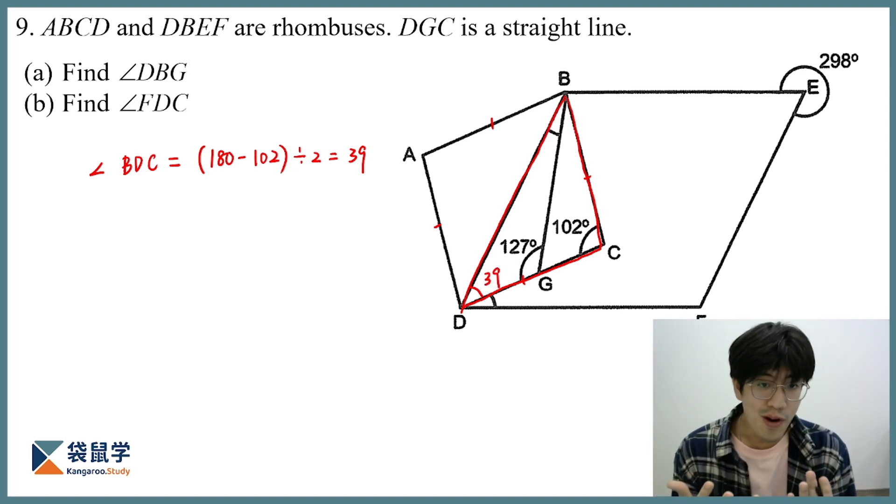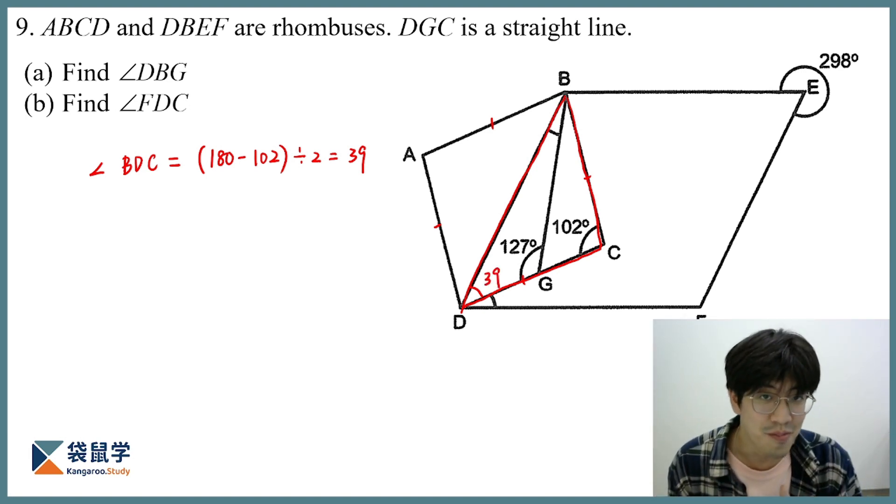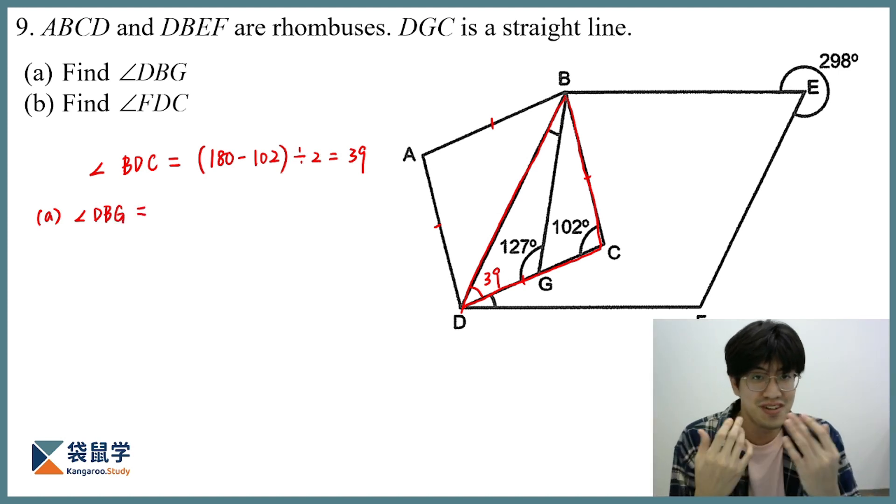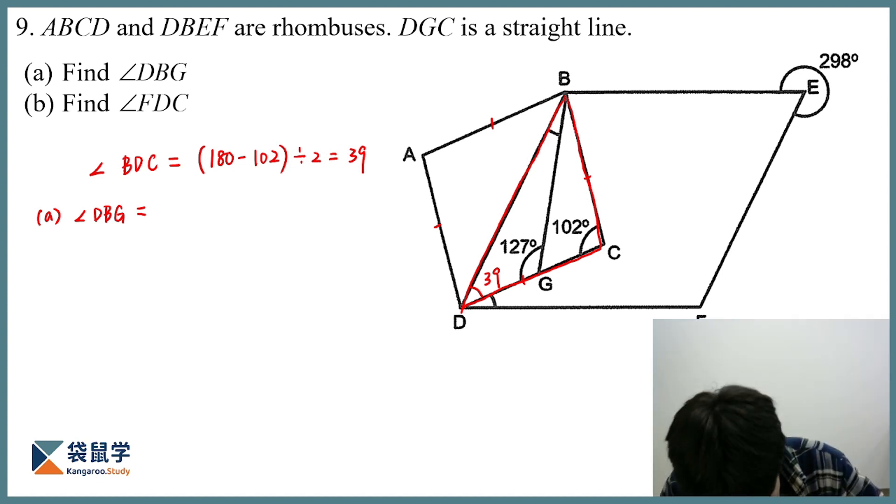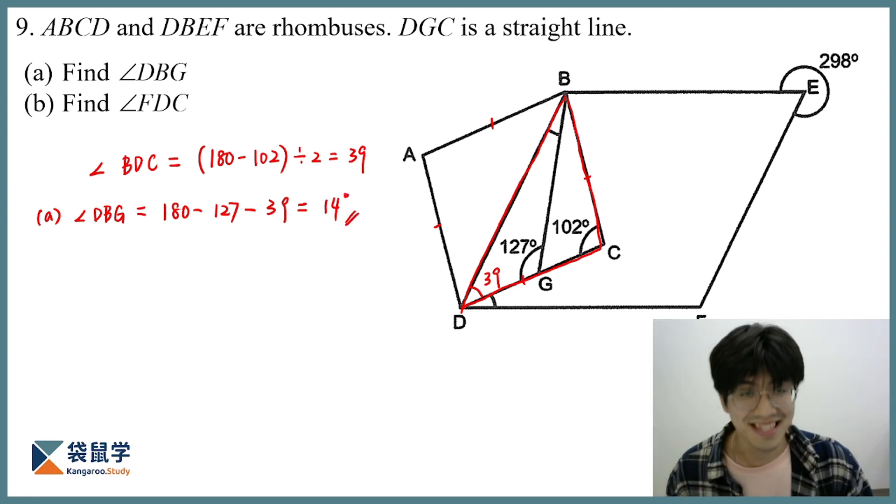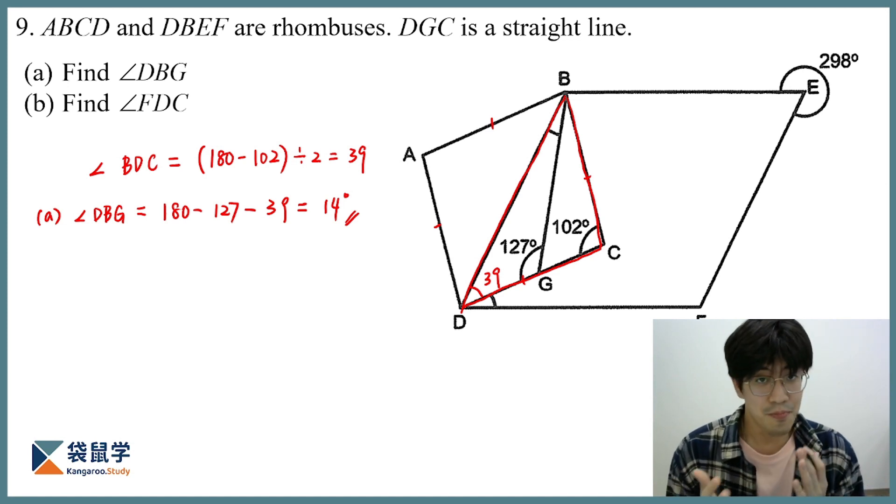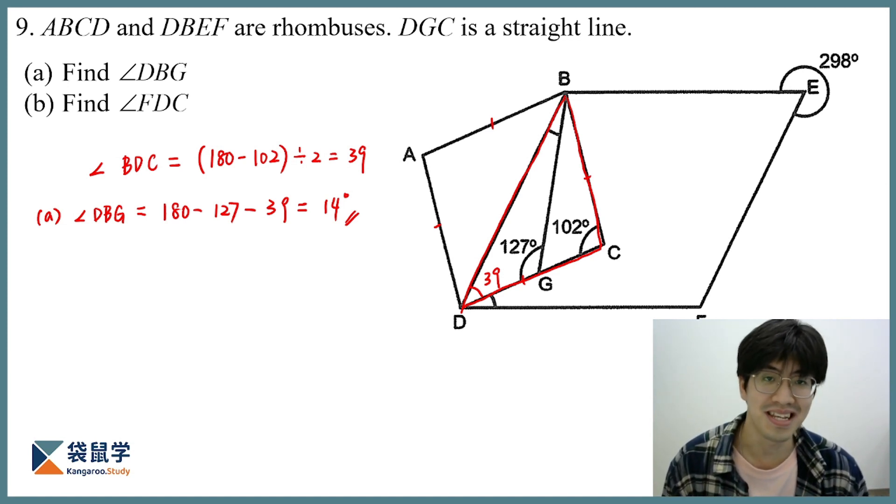And would I be able to work out DBG from here? Yes, of course. So now let me find out what is the angle DBG. Now using the property that the sum of interior angles of a triangle is 180, I can simply take 180 minus 127 and minus 33. And this will give me the answer, 14 degrees. So that's part A solved. So that's how rhombus, the properties of a rhombus can be applied in this first part.